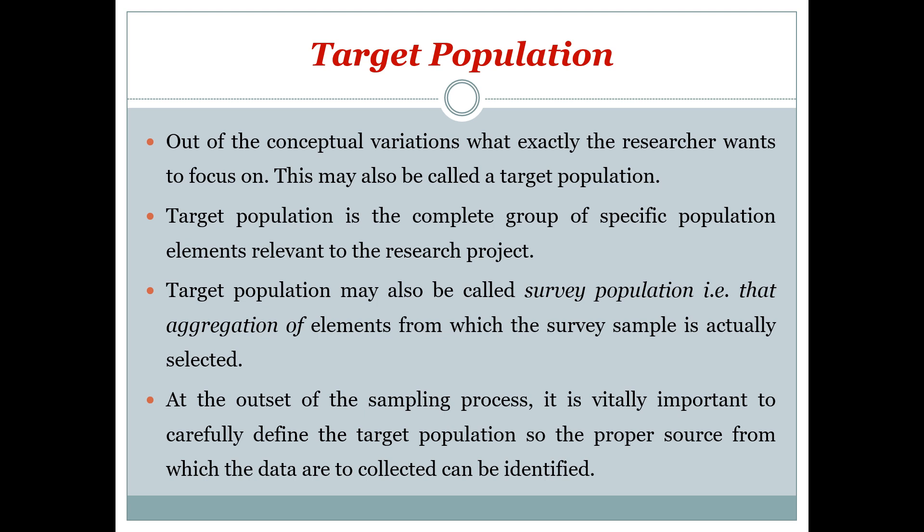At the outset of the sampling process, it is vitally important to carefully define the target population so that the proper source from which the data are collected can be identified. For example, if I say I am taking type 2 diabetic patients but only those who are having peripheral neuropathy, then type 2 diabetes with peripheral neuropathy becomes my target population. It has to be refined and when taking the sample, it is based on certain criteria.